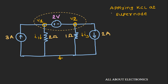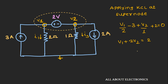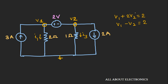Applying KCL at this supernode, we can write V1 by 2 minus 3 plus V2 by 1 ohm plus 2 ampere equals 0. We have combined the two separate KCL equations into one. Since we consider node 1 and 2 as a single entity, we do not consider the current flowing through the 2V voltage source. Simplifying gives us V1 plus 2V2 is equal to 2. Now, the potential difference between node 1 and 2 is 2V, so we write V1 minus V2 is equal to 2. Solving these two equations, we get V2 as 0V and V1 as 2V.